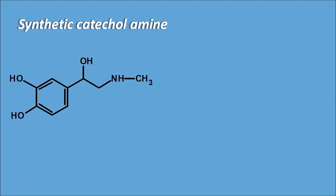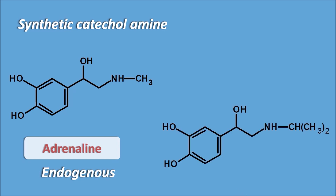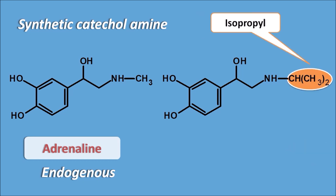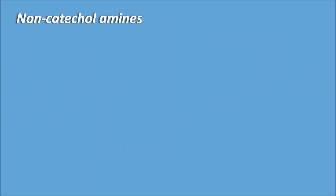Now let us see the synthetic catecholamines. Adrenaline has a methyl group on the nitrogen; in isoprenaline, this methyl group is replaced by an isopropyl group. So isoprenaline is the first synthetic catecholamine.